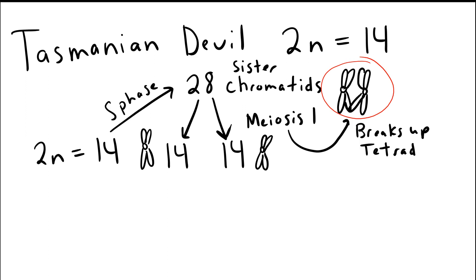After meiosis I, the tetrad has been broken up and the homologous chromosomes have been separated. This is what I'm showing you here. We have two daughter cells after meiosis I. Each daughter cell will have 14 sister chromatids. These chromatids represent seven pairs of eventual chromosomes.